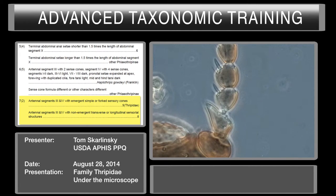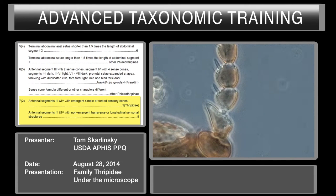You always have both sides to check. Sometimes you get a specimen that has one of the antennae knocked off. You have to be very careful — sometimes it's very difficult to see in smaller specimens. For example, some Dendrothripinae in the genus Leucothrips have very tiny forked sense cones that can appear to be simple.